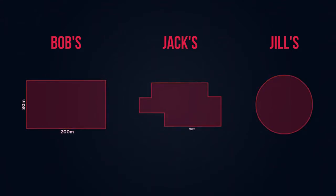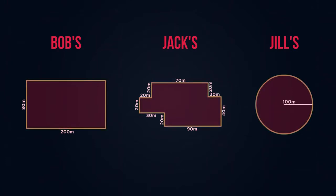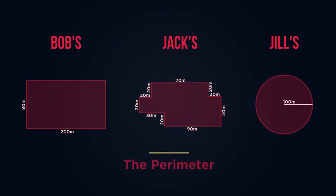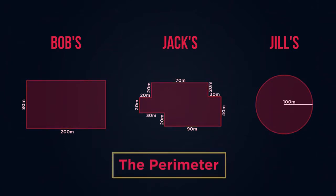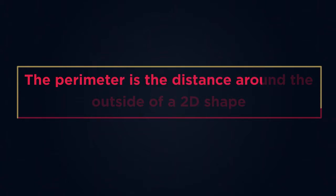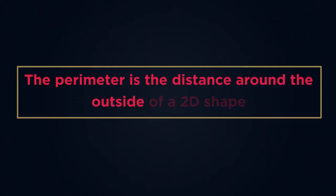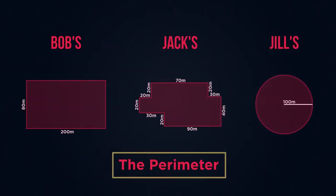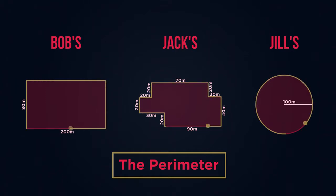In order to determine the length of fencing that they need, we're going to use a concept called the perimeter. The perimeter is the distance around the outside of a 2D shape. So what's the perimeter of each farmer's field? We need to work out the distance around the outside of each field.